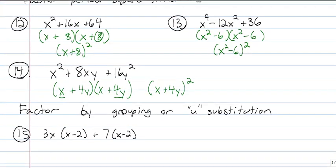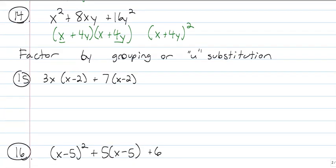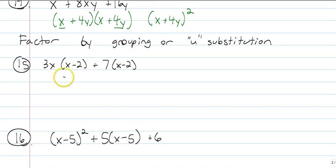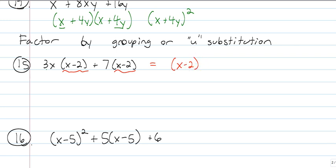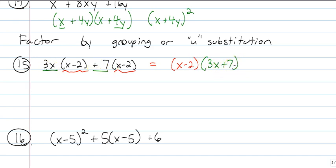Last two — factor by grouping, and U-substitution. Grouping is basically when you have a piece such as this, with something outside multiplied by a factor like x minus 2, and then another piece multiplied by the same factor — you can just factor by grouping them. We have our x minus 2 still, and then also this piece and this piece. So we have x minus 2, and then my remaining factor is 3x plus 7. And that's all you have to do for factoring by grouping, if it's already set up for you.